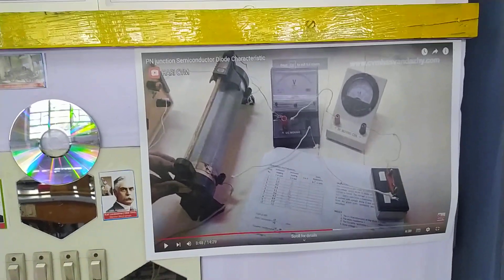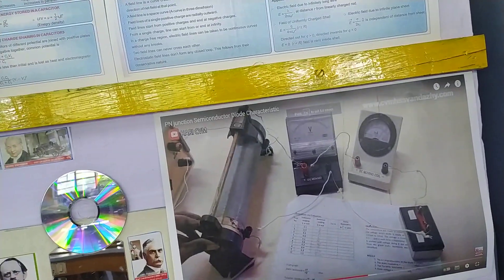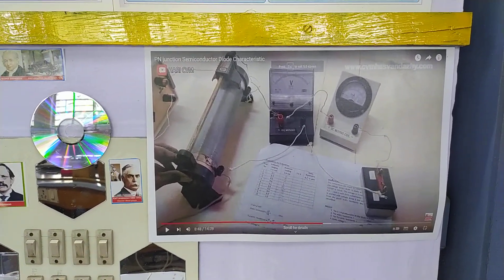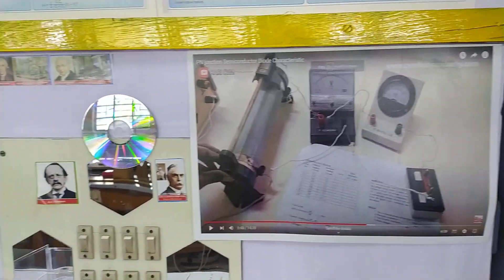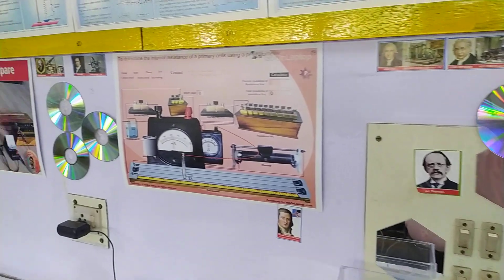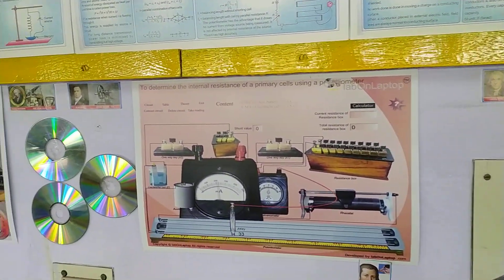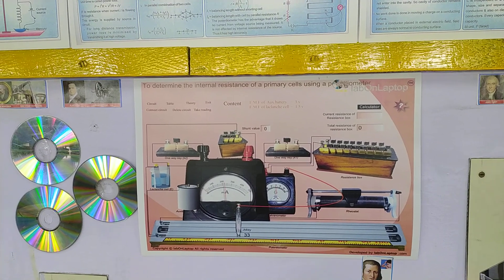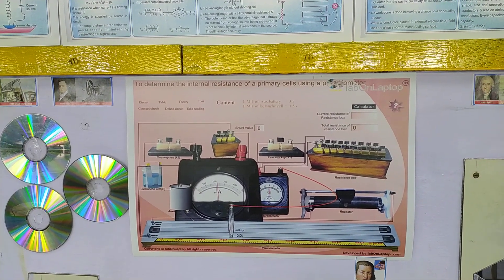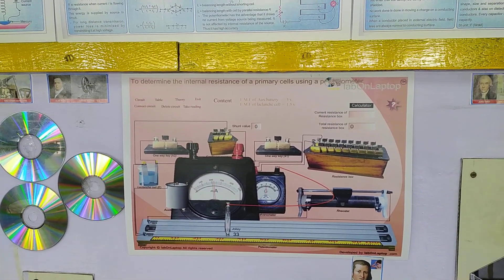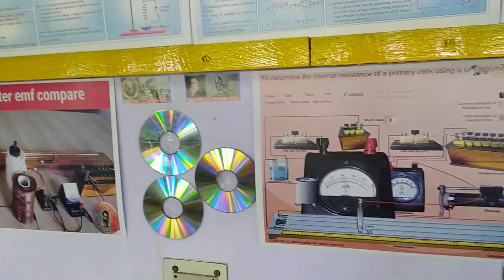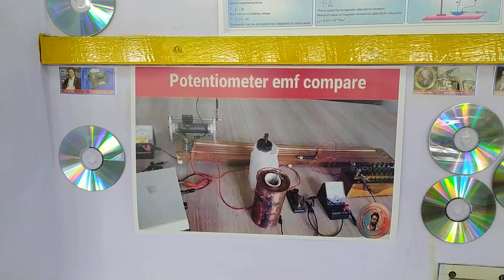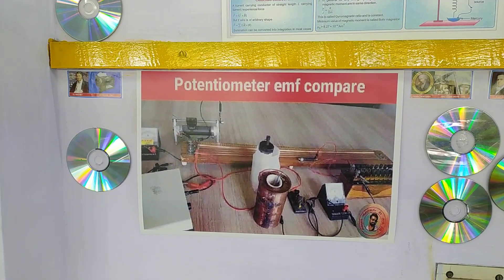This is the Ohm's law experiment. Next, this is to determine the internal resistance of a primary cell using a potentiometer, and also the EMF comparison experiment using a potentiometer.